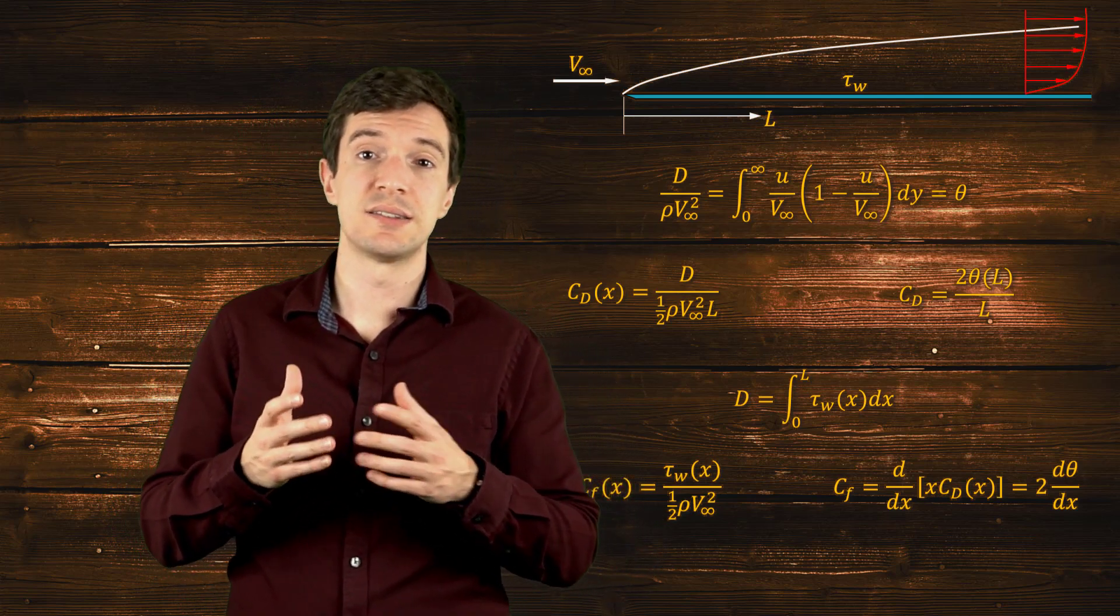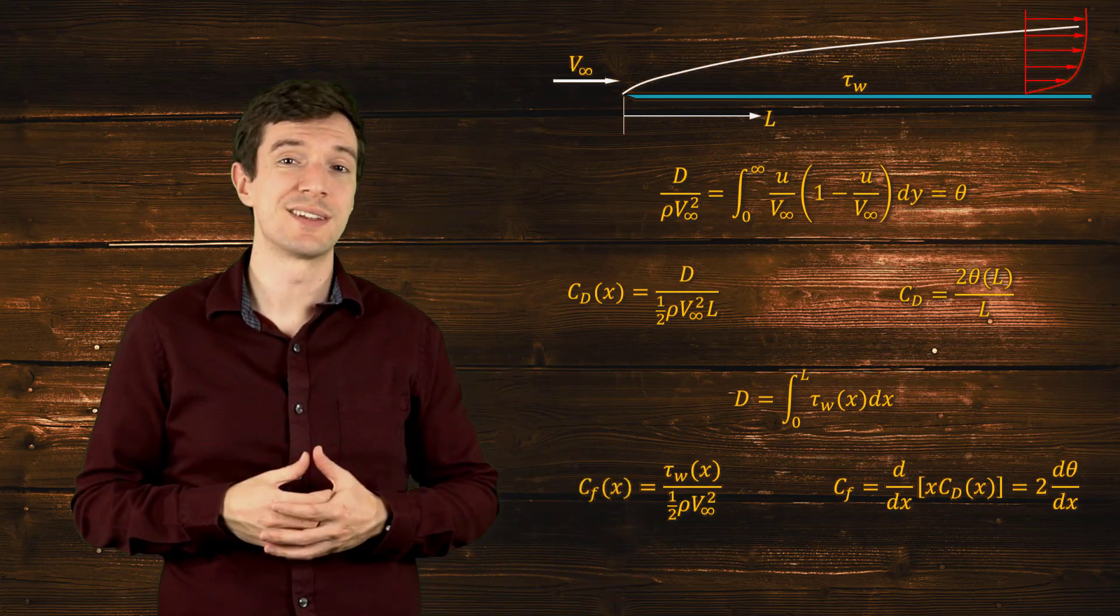The final result gives us the friction coefficient and we can see that it is equal to twice the derivative along the x direction of the momentum thickness. Our first assumption for the analysis is that the velocity profile in the boundary layer is known, either from experimental results or numerical simulations.